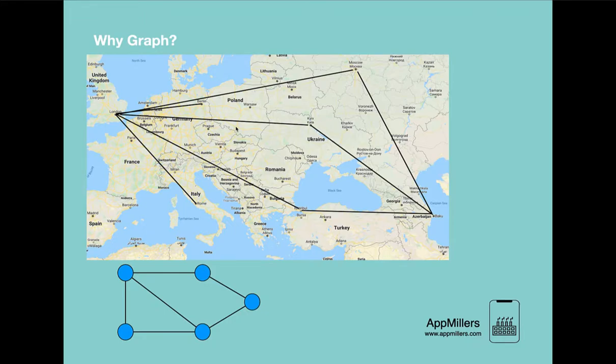So the only option is graph data structure. Let's see how we can solve this problem using graph data structure. In a typical graph we have vertices and edges. We can represent these cities as vertices in this graph and we can connect them with edges. And the edge will be the path between these cities. And we can calculate the cost of this path and set them as weights.